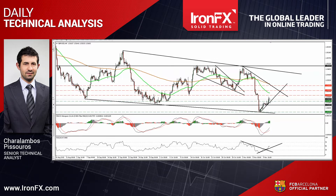The rate now could be headed towards the 1.52 barrier, where a clear break could extend the positive move towards the next resistance at 1.5250. Today we get the UK employment report for September, where the employment rate is expected to have remained unchanged, but average weekly earnings are forecast to have accelerated. This could be the trigger for the move above the 1.52 zone.